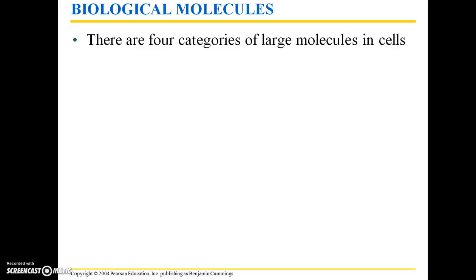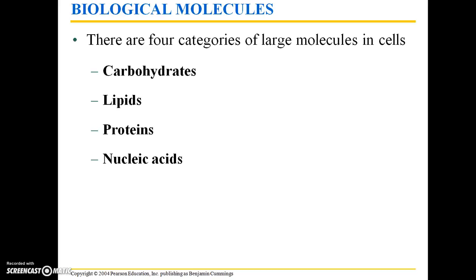There are four main categories of large molecules in cells: carbohydrates, lipids, proteins, and nucleic acids. Lipids are commonly referred to as fats. Carbohydrates, abbreviated carbs, and proteins are all sources of dietary nutrition. Nucleic acids are the DNA and RNA molecules.